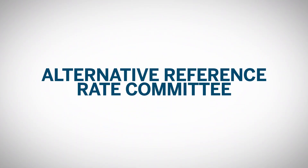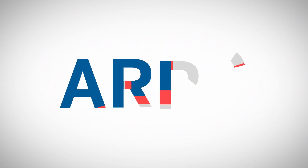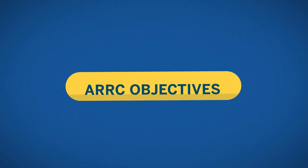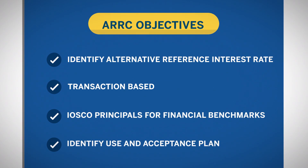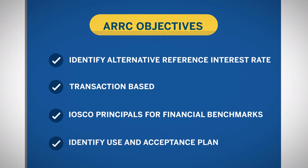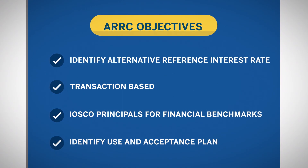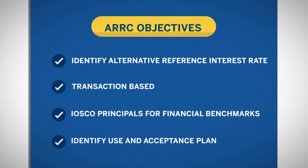In November 2014, the U.S. Federal Reserve convened the Alternative Reference Rate Committee, or ARRC. The ARRC's objective was to identify a set of alternative reference interest rates firmly based on transactions from a robust underlying market that comply with the International Organization of Securities Commission's principles for financial benchmarks.